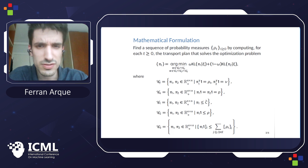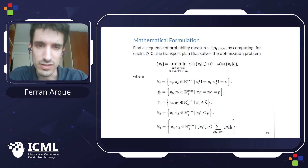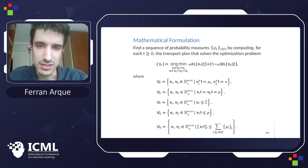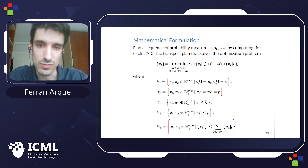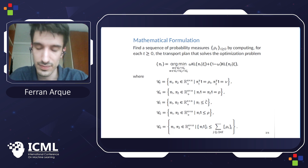A key observation is that we take advantage of the capacity constraint and fix the capacity to zero if there is not an edge that connects two nodes. With that, we ensure that no mass is sent between them.